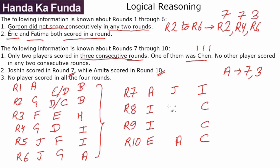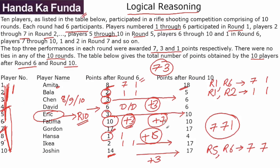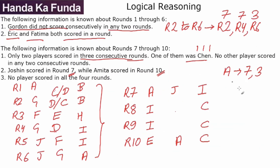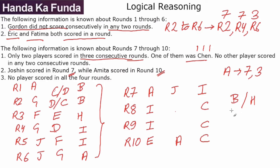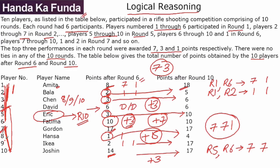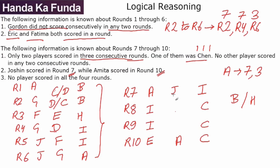There are two more players who must have scored 3 each. Bala is going from 2 to 5, and Hansa is moving from 1 to 4 — both a gain of 3. Hansa will be in rounds 7 and 8. Round 7's silver medal is already occupied by Joshin, so Hansa got the silver medal in round 8. The only position left for Bala to score a silver medal is round 9. This gives us the final arrangement.